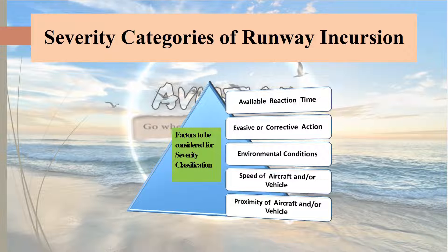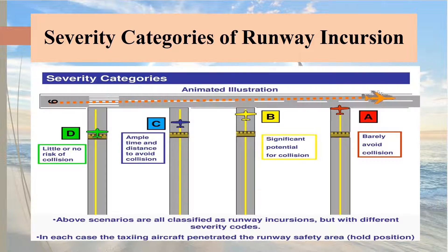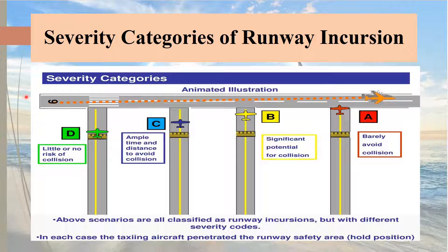As you can see in the image, the severity categories for runway incursion are A, B, C, and D. In category D, the aircraft on the taxiway has crossed the runway holding position, which qualifies as a runway incursion per definition. However, if there is an arriving aircraft, there is very little or no risk of collision. This situation qualifies for category D severity.